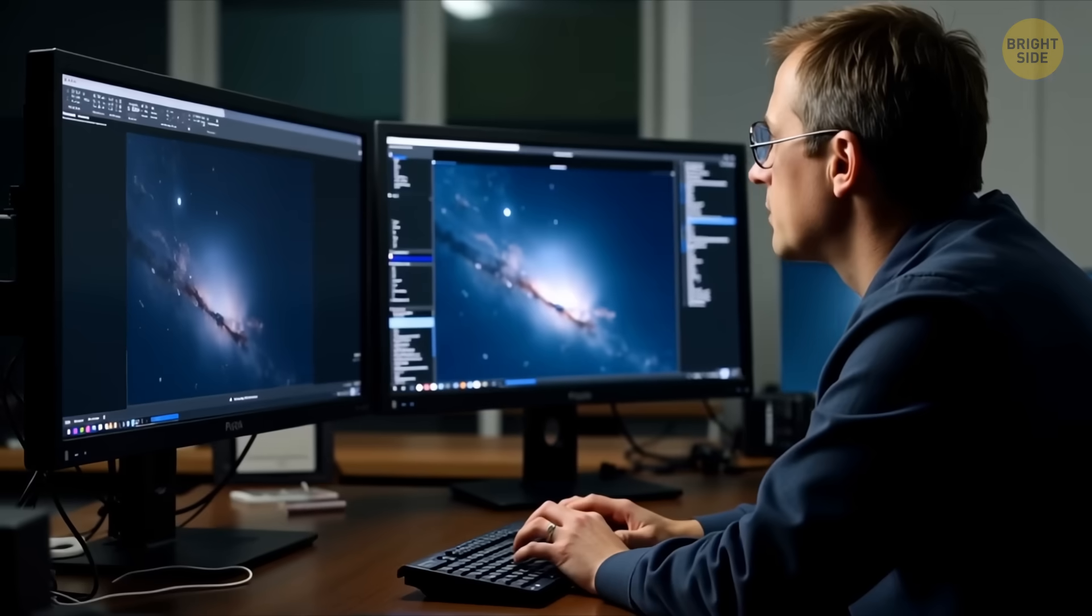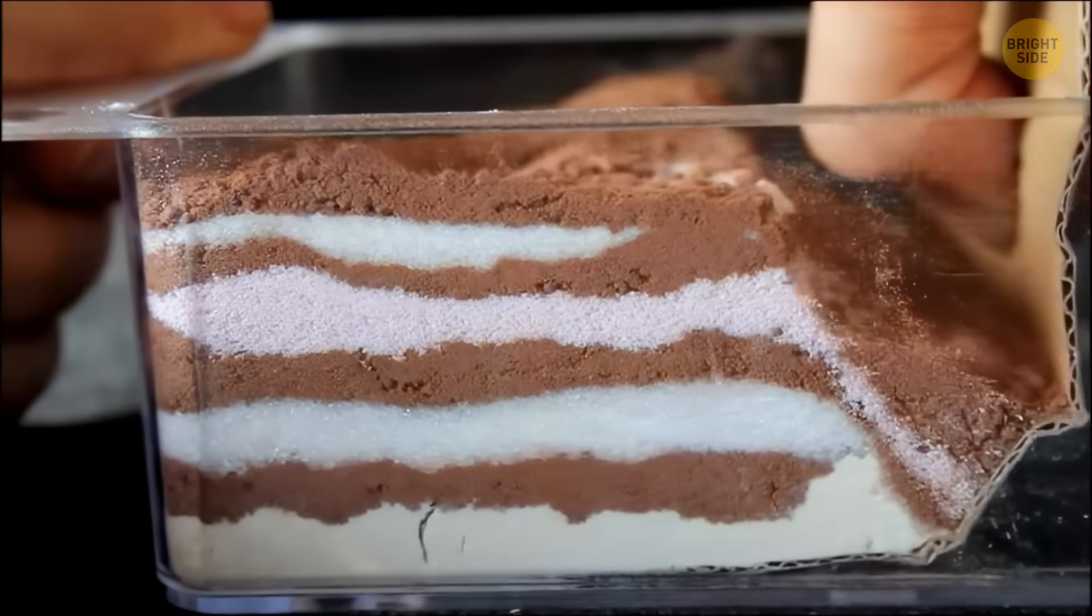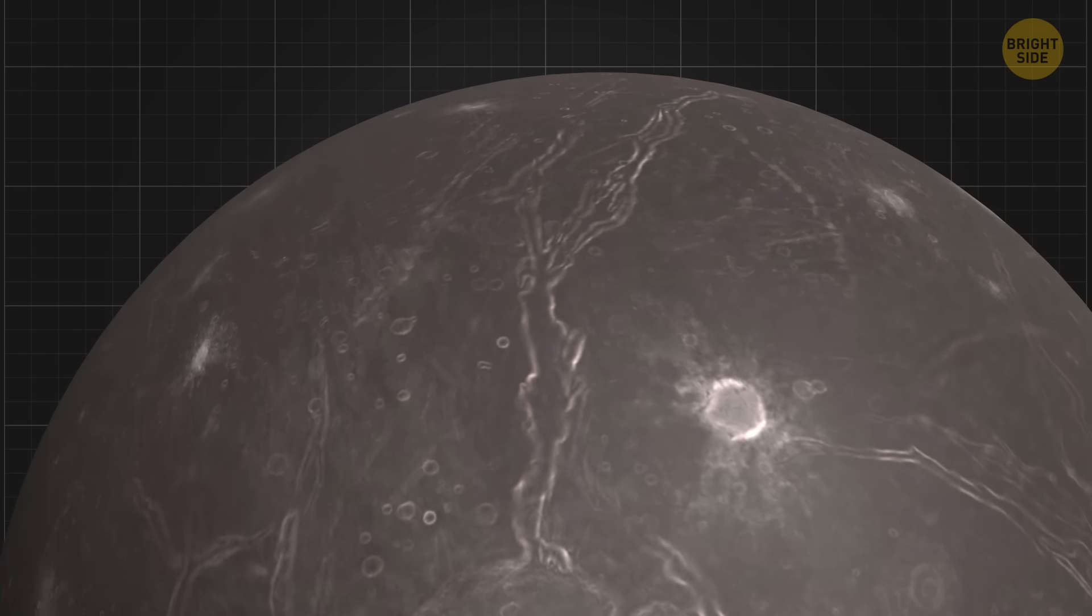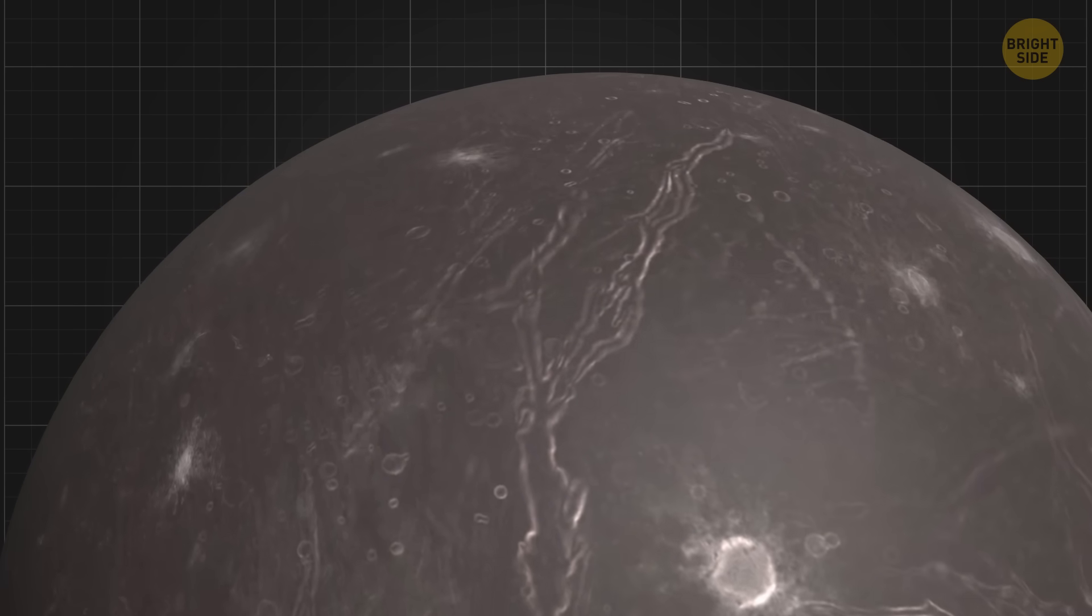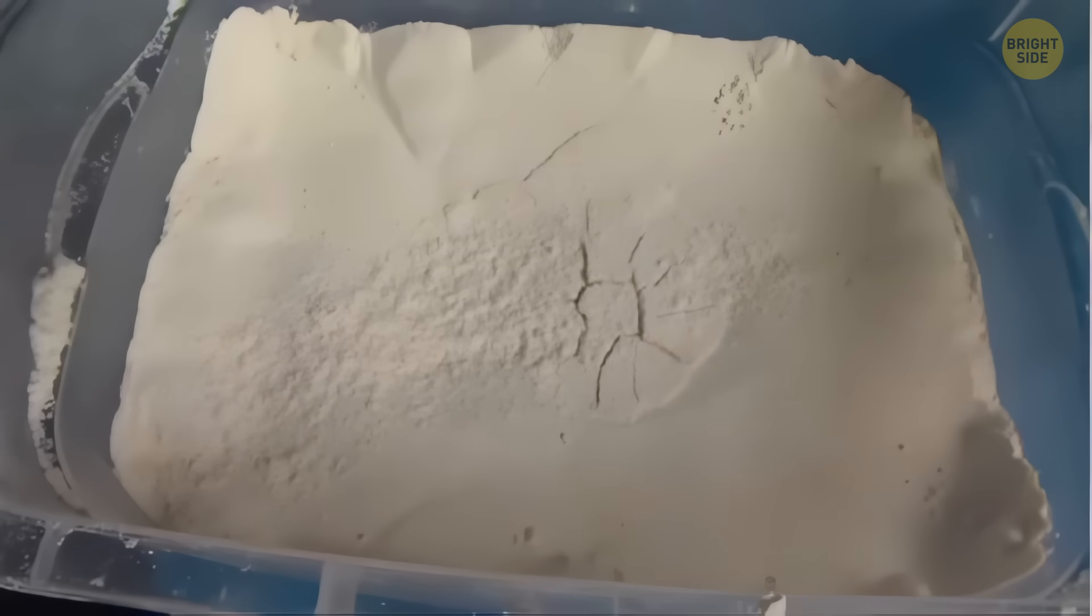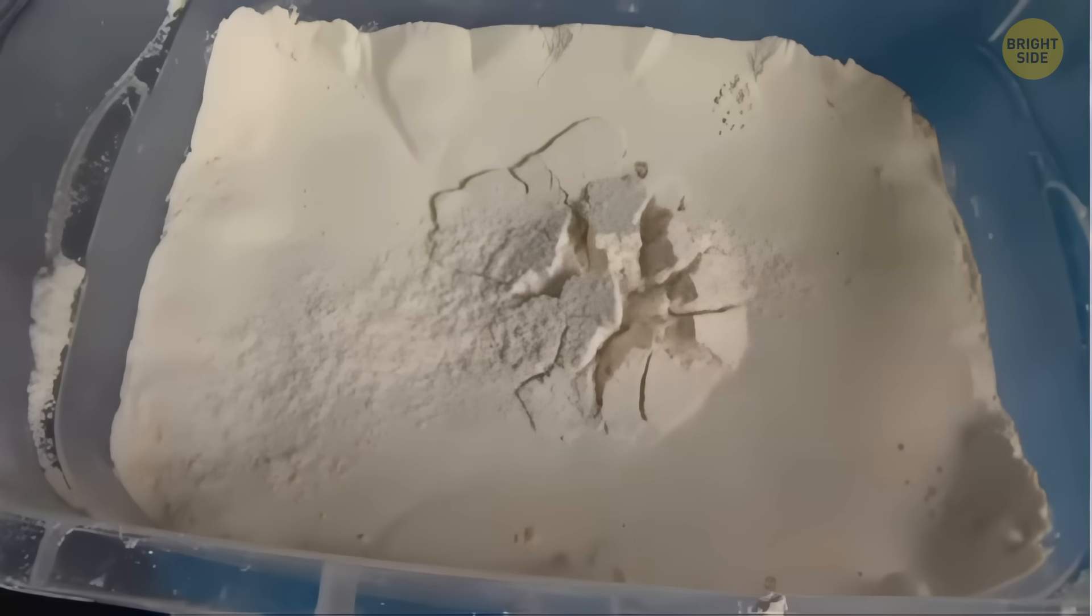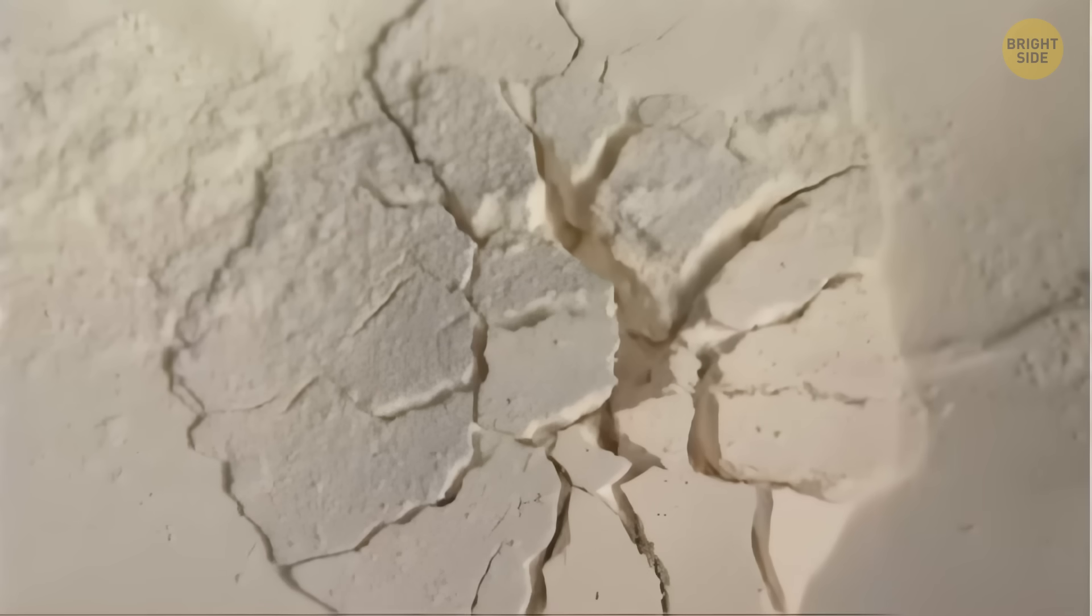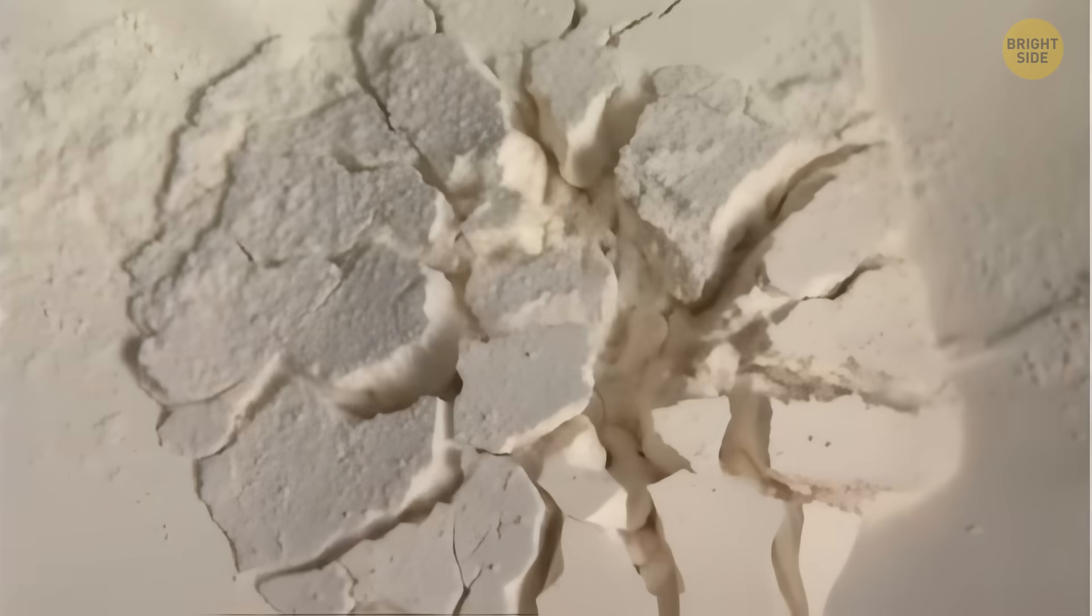When scientists studied those fractures, technically called grabens, they found something strange. The pattern of these cracks looks exactly like what happens when there's pressure building underneath the surface, like a balloon stretching before it pops. It's as if something deep inside Ariel was pushing outward, warping and breaking the crust.